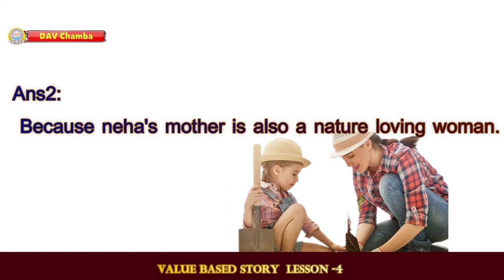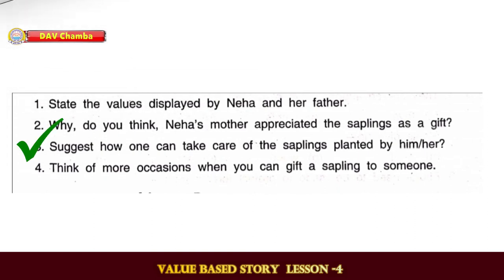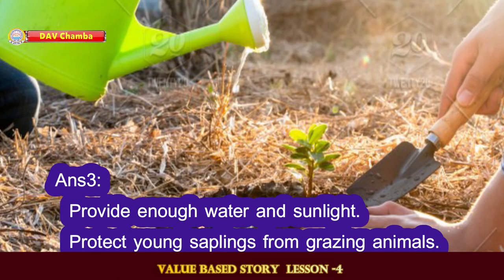Question 3: Suggest how one can take care of the saplings planted by him or her. We can take care of saplings by providing enough water and sunlight, and by protecting young saplings from grazing animals.